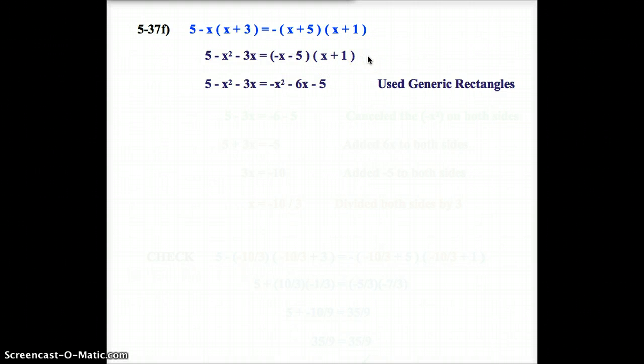Now, using a generic rectangle, I'm not going to show that. You should know how that works, but using a generic rectangle my answer, these two combine to become negative x squared minus 6x minus 5.